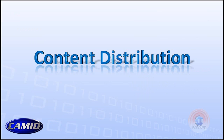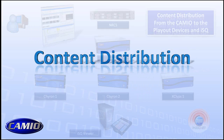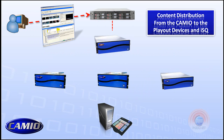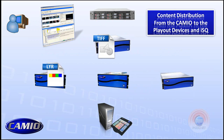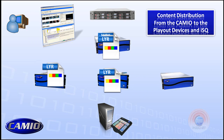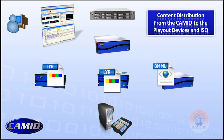Content distribution is also a key function of Cameo. As the journalist creates a graphic and drags it into the newsroom system, it goes with instructions to the Cameo server. The Cameo server takes that Lyric file and pushes it to the proper playout device as requested. Graphics sent to the devices are pushed across in Lyric. HyperX devices hold all the images and assets. Xclips devices get a BMML — Broadcast Metadata Markup Language — which is an instruction on how to use the assets in Xclips.